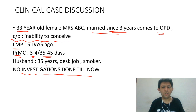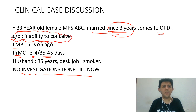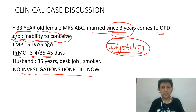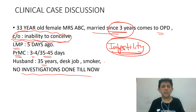They are married for three years and she has come with complaints of inability to conceive — so this is a case of infertility. Infertility is defined as inability to conceive in spite of one year of regular unprotected intercourse. We will discuss how to proceed further with investigations. No investigations have been done till now.